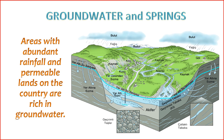8. Faults and Fractures — faults and fractures in the Earth's crust can create pathways for groundwater movement. Springs may emerge along fault lines or fractured zones. 9. Hydraulic Conductivity — the ability of the subsurface materials to transmit water, known as hydraulic conductivity, influences groundwater flow. Higher hydraulic conductivity promotes better groundwater potential.